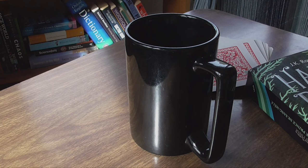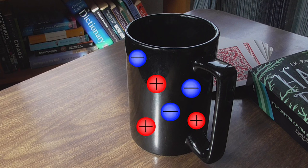Ordinarily, the objects around us are electrically neutral. This is because, although they contain electrically charged protons and electrons, the numbers of these particles are equal. Any forces they generate are balanced out, or simply too small to notice.